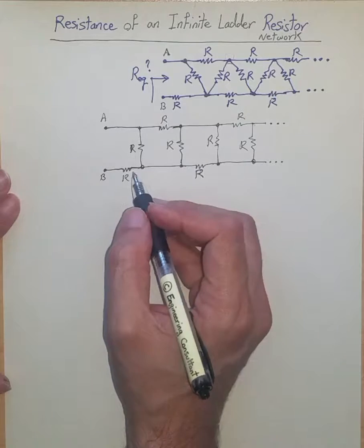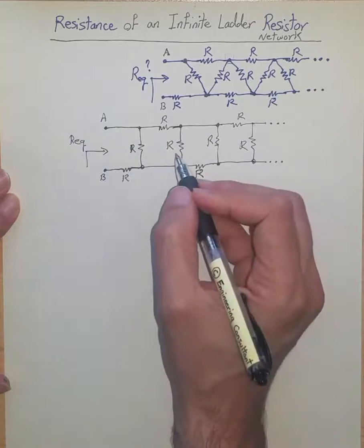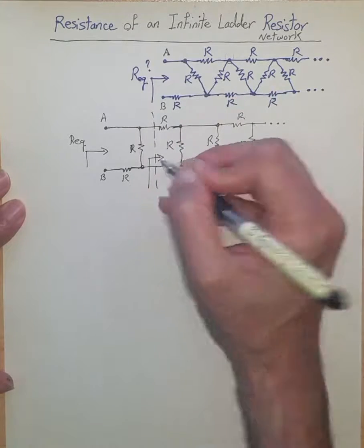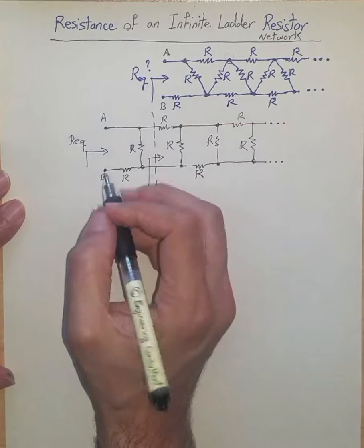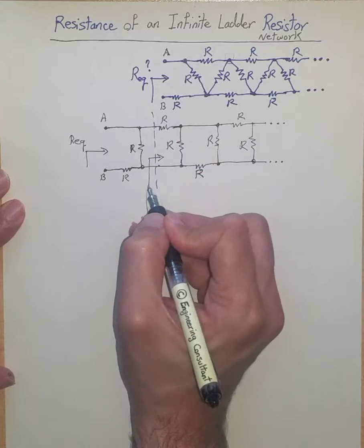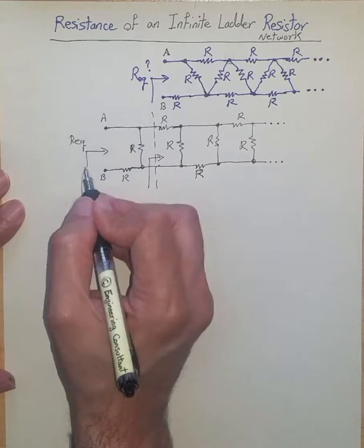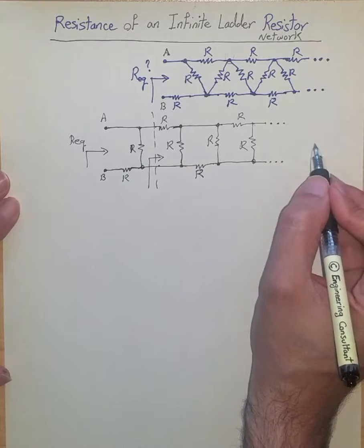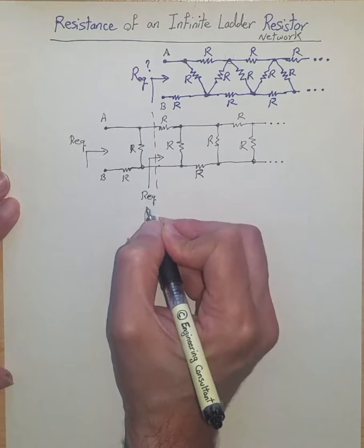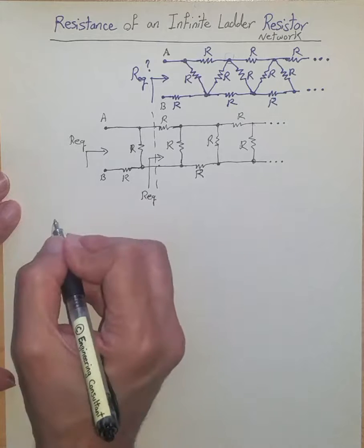As you can see, if you look from the input — where you want to find the equivalent or input resistance of this network — when you look from this point inward, you see the same thing; it's only flipped. Imagine node B is here and node A is here. When you look from this point toward the infinite ladder resistive network, you see exactly what you're seeing from the other side, because this thing is going on forever. So if this is a finite value, it should also be observed here as well.